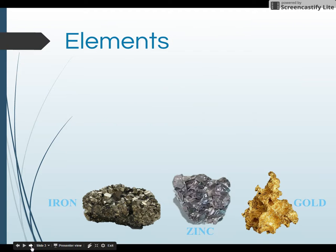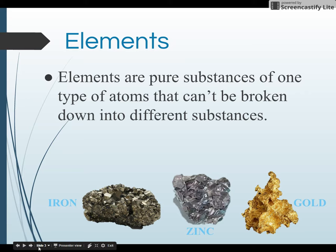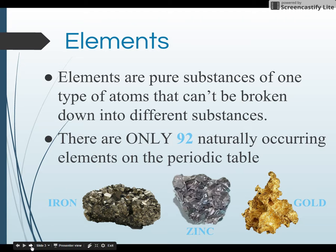Sometimes you hear the word elements, and that can be used also with atoms, because elements are pure substances of one type of atom that can't be broken down into different substances. There are only 92 naturally occurring elements or atoms on the periodic table.